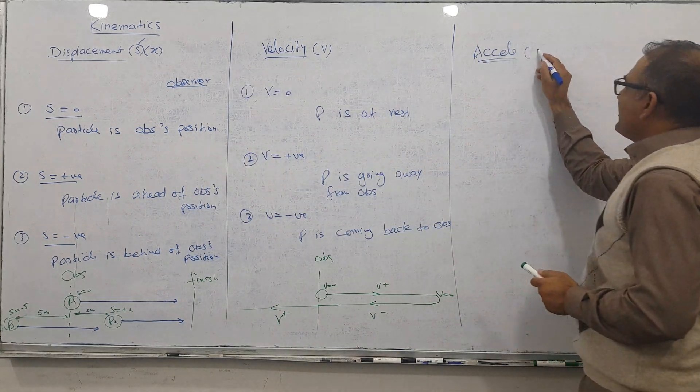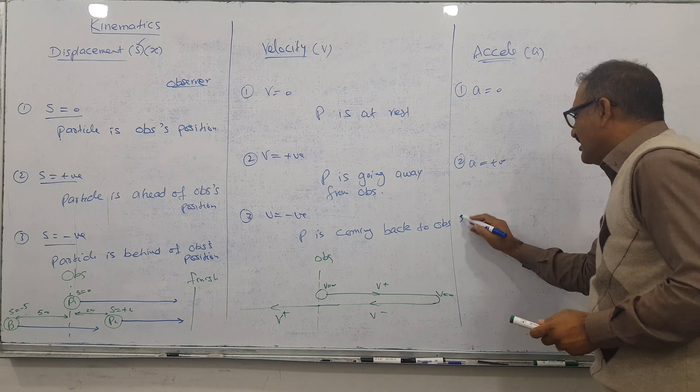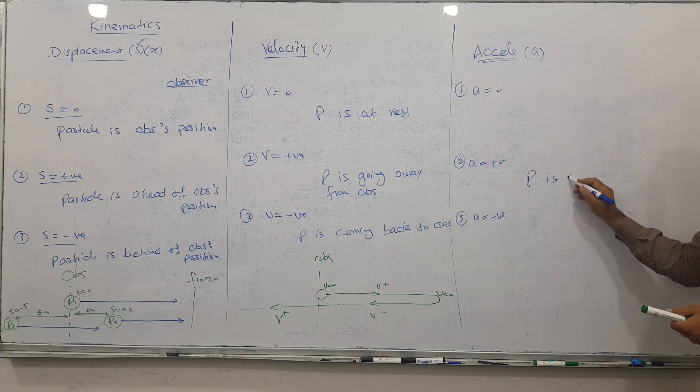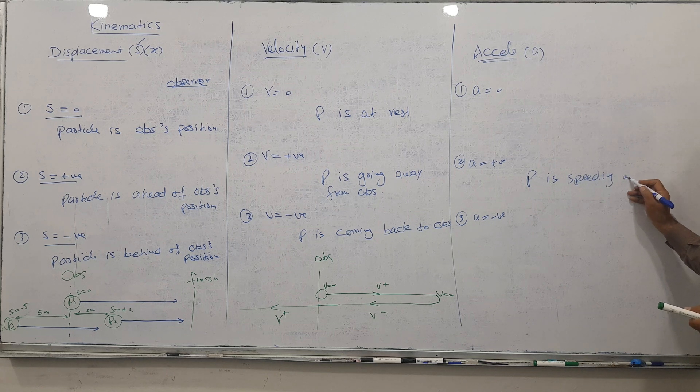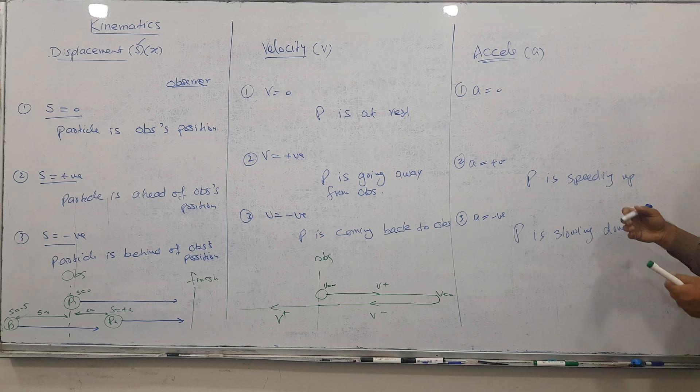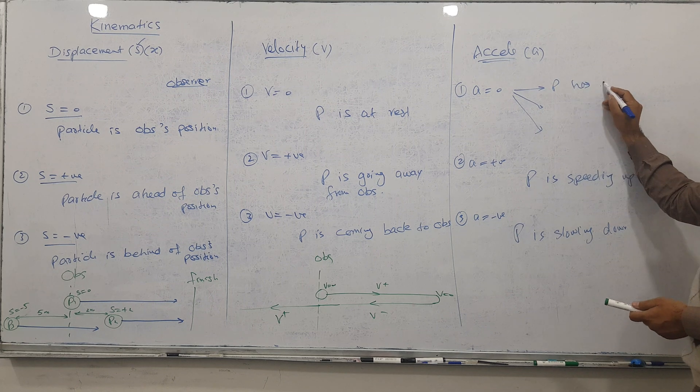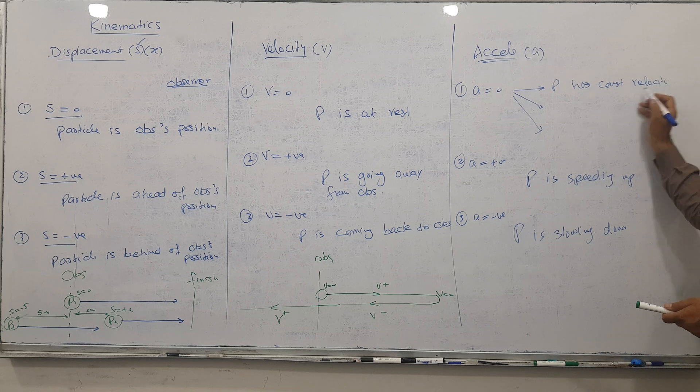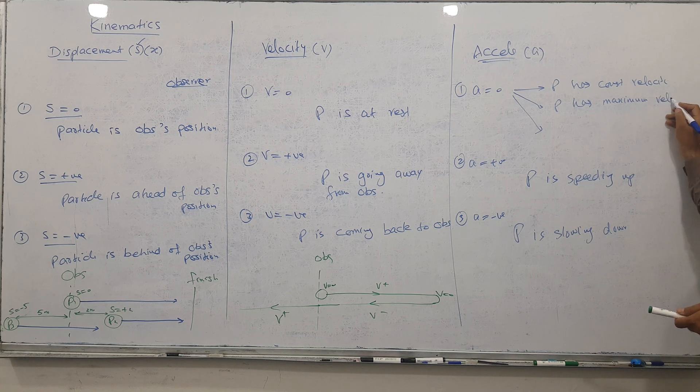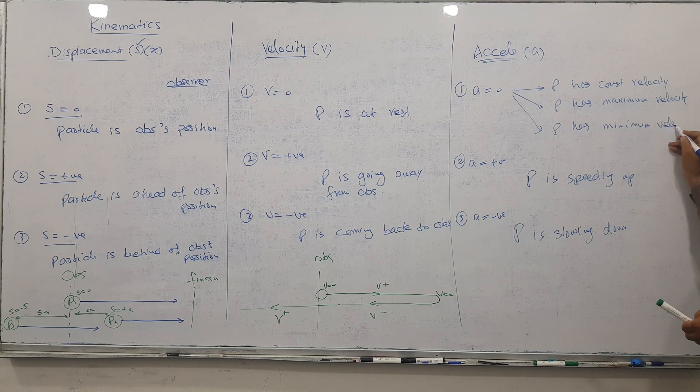Last part is acceleration. Acceleration is represented by a, and it has three rules again. A is zero, a is positive, and a is negative. When you talk about positive, positive means P is speeding up, going fast. Negative means P is slowing down, gradually decreasing. And for a equals zero, we have three rules: P has constant velocity, P has maximum velocity, and P has minimum velocity.